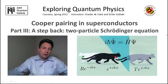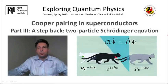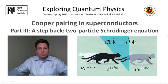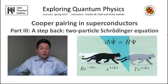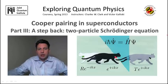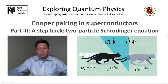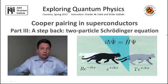In the previous video, we advertised the main result we're going to derive: electrons near the Fermi surface at low temperatures form bound states of two electrons, which condense and form the superconductor. Now we're entering the technical part of the lecture where we actually get this calculation done and see how it happens.